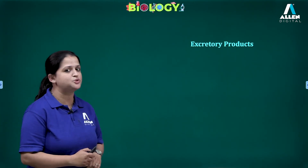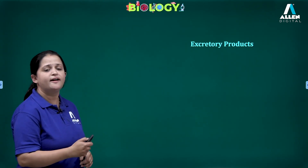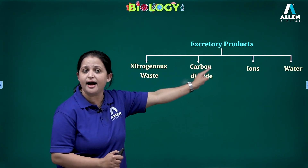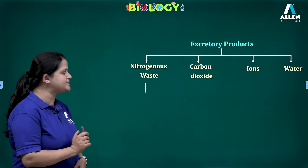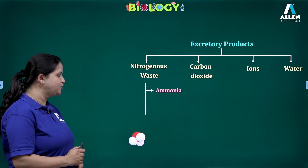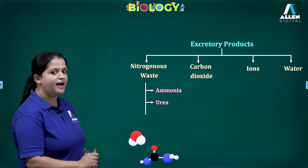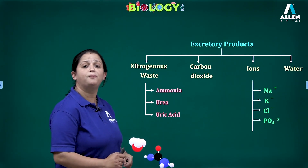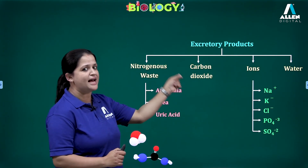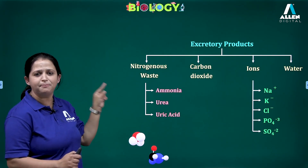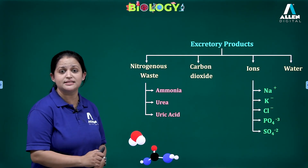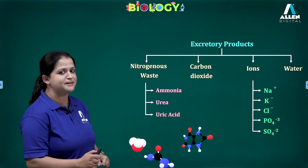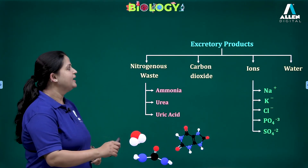In our body, many nitrogenous waste and other waste materials are produced. Majorly they are nitrogenous waste, carbon dioxide, ions, and water. The three nitrogenous waste examples are ammonia, urea, and uric acid. Examples for ions are sodium, potassium, chloride, phosphate, and sulphate. These are examples of the different waste materials generated in our body, and the process of removal of these nitrogenous waste materials is known as excretion.